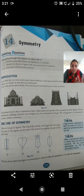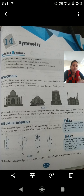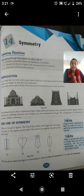Now if you see the page, it is written there: Learning Objectives. After going through this chapter, we will be able to identify symmetrical objects and their lines of symmetry. We will learn to identify figures with one or more lines of symmetry, see how many lines of symmetry a figure has, and also learn about reflection and symmetry.